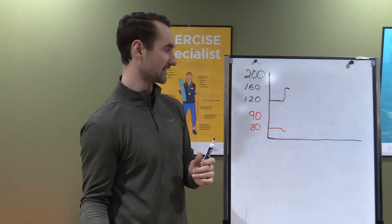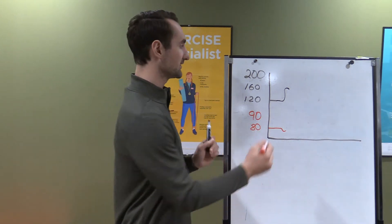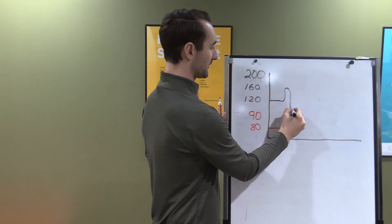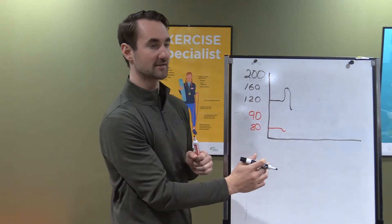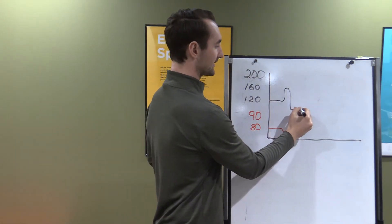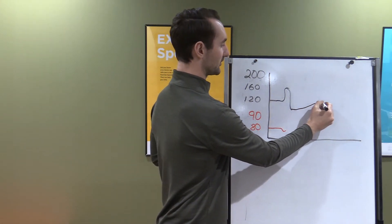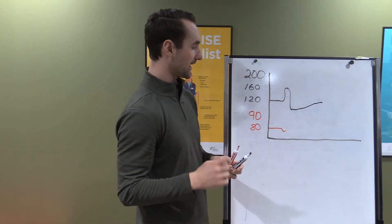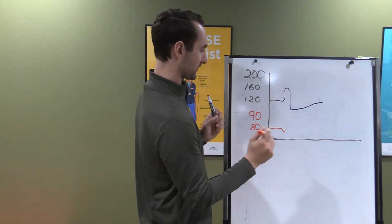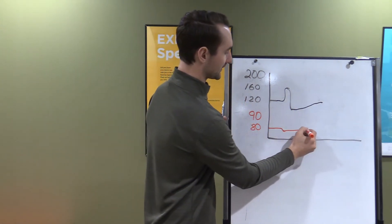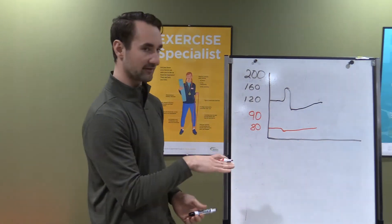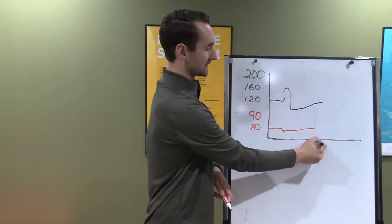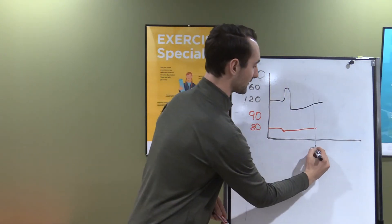Following the exercise session for about the next 24 hours, right after you're done your workout, your blood pressure actually goes below where it started and then it slowly creeps back up to normal over the course of the next 24 to 48 hours. The diastolic goes down a little bit and then slowly comes back up to normal after 24 hours.